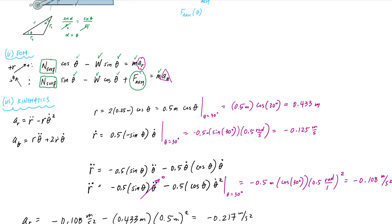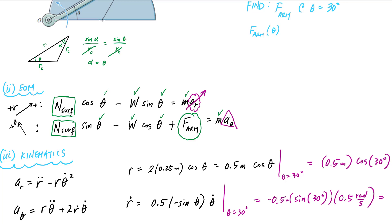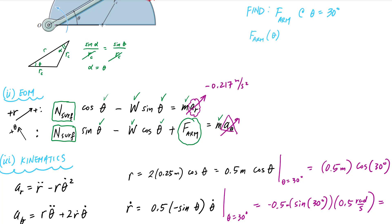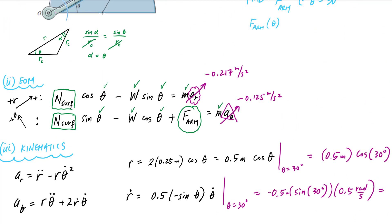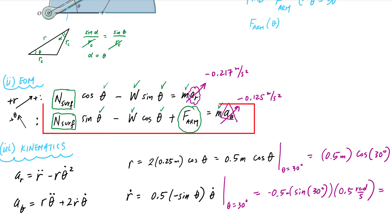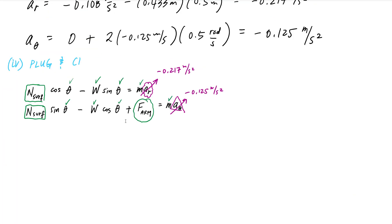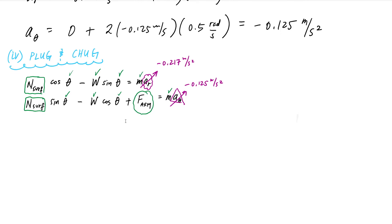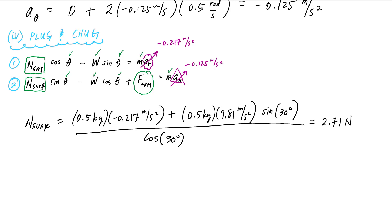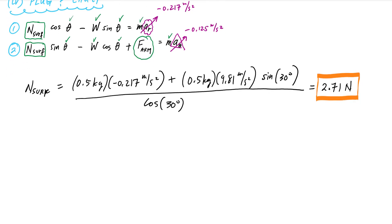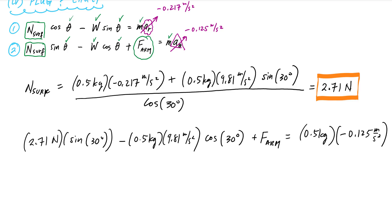Now I have a_r = −0.217 m/s² and a_theta = −0.125 m/s², and I go back to my equations of motion. I now have two equations and two unknowns. I use the first equation to solve for N_surf, the normal force from the surface, getting 2.71 Newtons. Then I plug that into the second equation — one equation, one unknown — and solve for F_arm, the force from the arm, which is 2.83 Newtons.